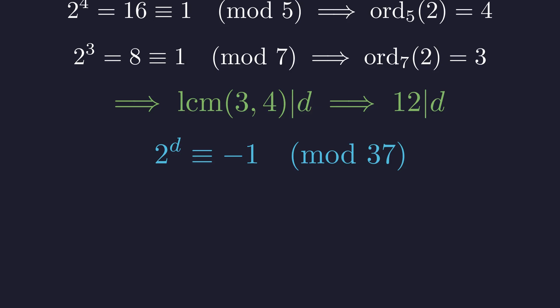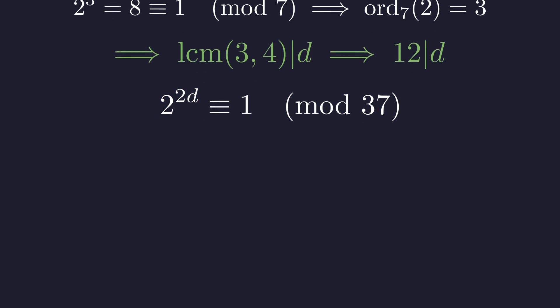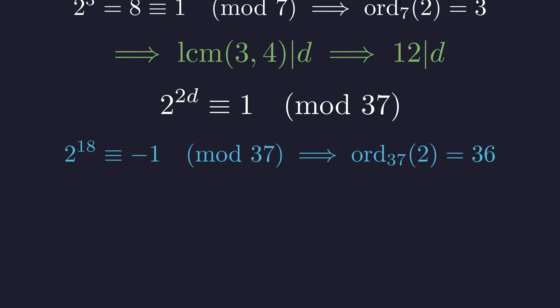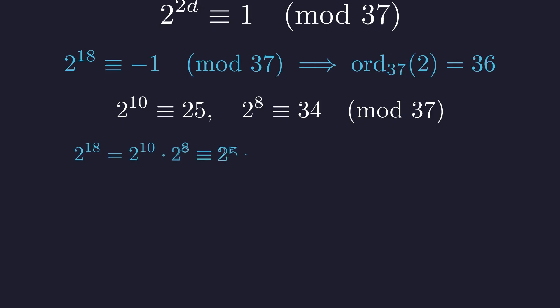Now let's examine our first condition: 2^d ≡ −1 (mod 37). Squaring both sides gives 2^(2d) ≡ 1 (mod 37). We can verify that 2^18 ≡ −1 (mod 37): since 2^10 = 1024 ≡ 25 (mod 37) and 2^8 = 256 ≡ 34 (mod 37), we get 2^18 = 25 × 34 = 850 ≡ −1 (mod 37). Since squaring gives 2^36 ≡ 1 and 2^18 is not 1, the order of 2 modulo 37 is 36.